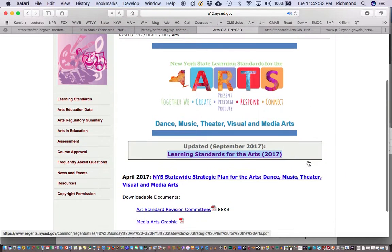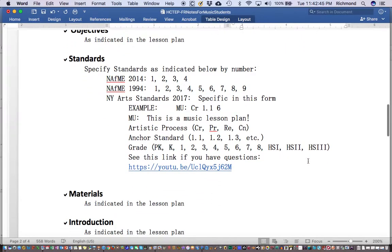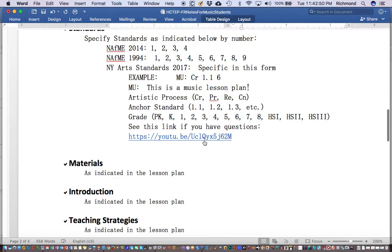The New York standards also need to be addressed. The quickest and easiest way for me to suggest that you would do that would be to watch my separate video on the New York standards. Here's a link to the video that I've created on the New York standards. You would specify this is a New York standard, MU colon, and then specify the artistic process: either creating, performing, responding, or connecting. Then you would also identify the anchor standard: one one, one two, one three, and so on. And you would identify the grade. This example shows what a typical New York standard looks like. If you are unacquainted with this particular information, you should watch this other video on the New York standards.